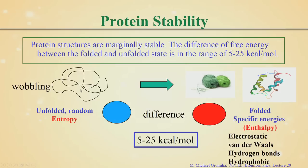In the unfolded state, there is a kind of wobbling conformation. The major factor influencing this conformation is entropy, which depends upon how many degrees of freedom this protein has in the unfolded state. In the folded state, this 3D structure is maintained by different types of interactions.